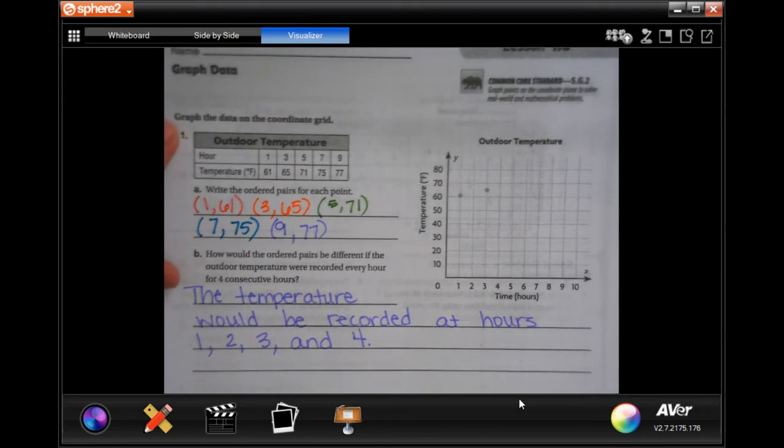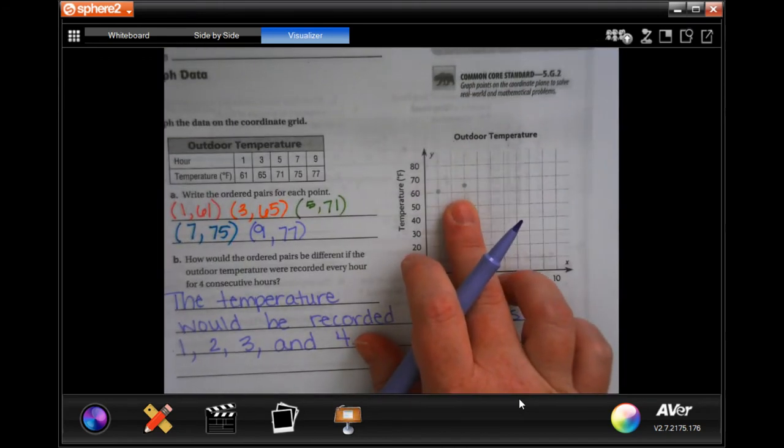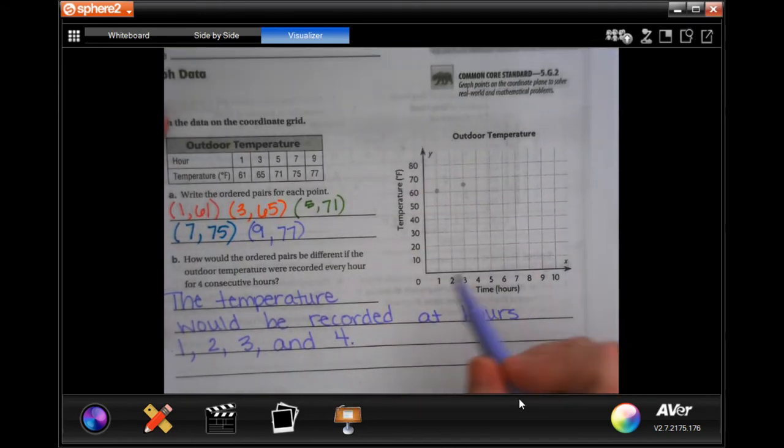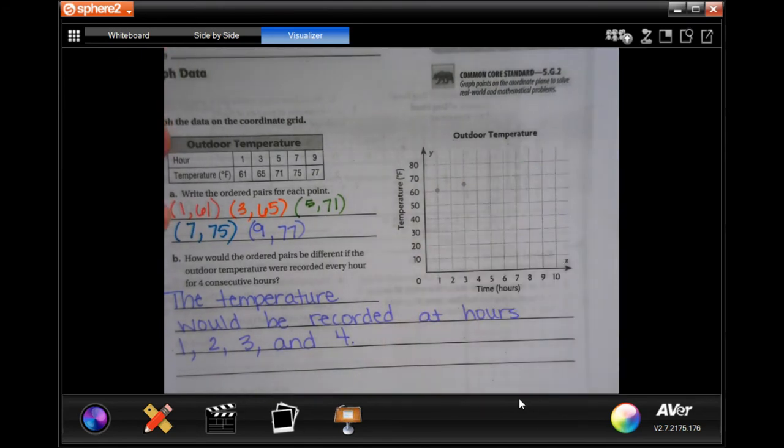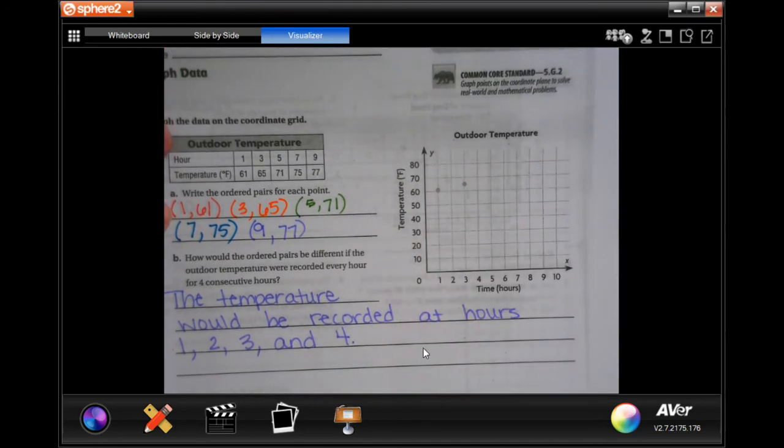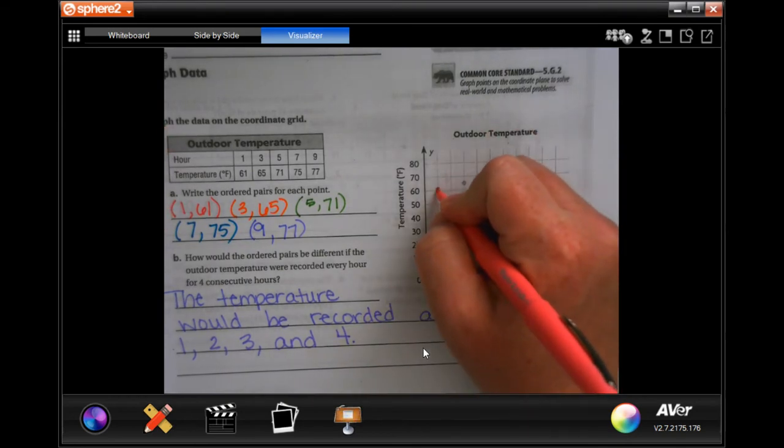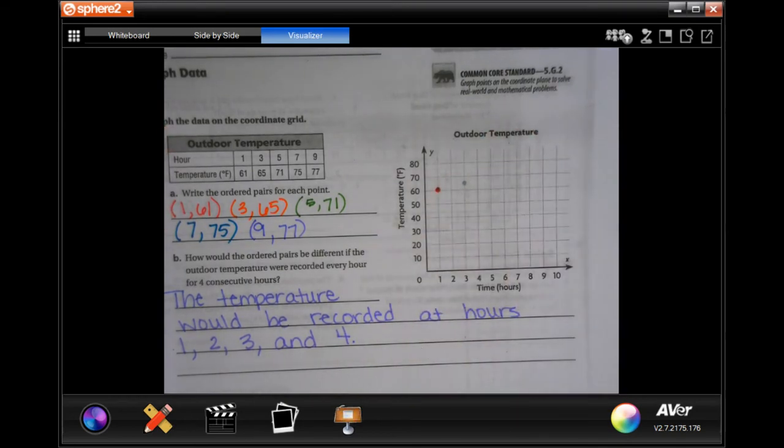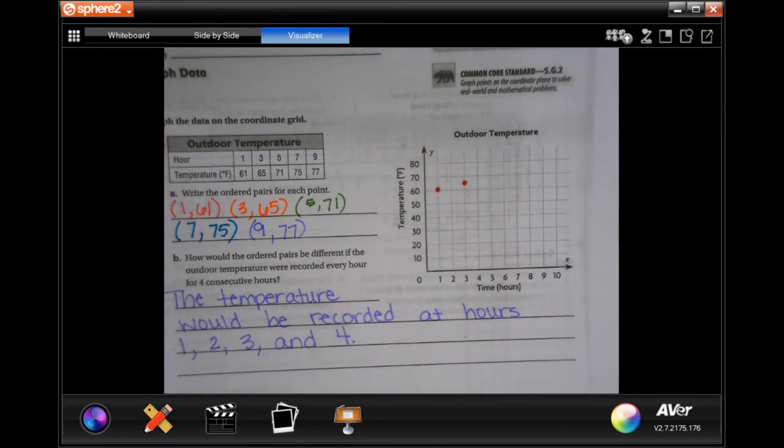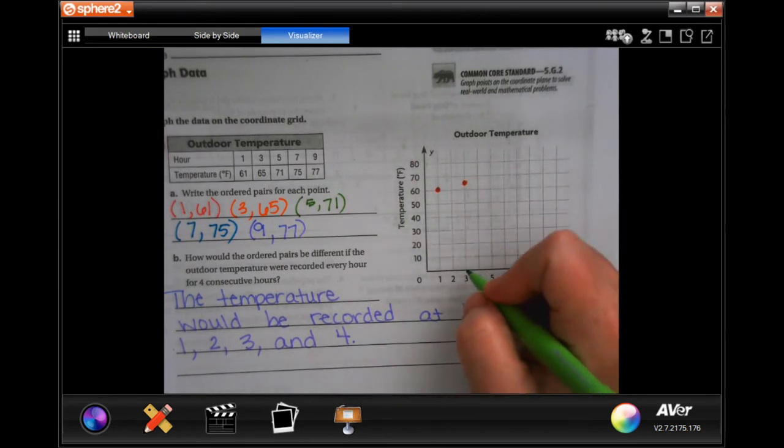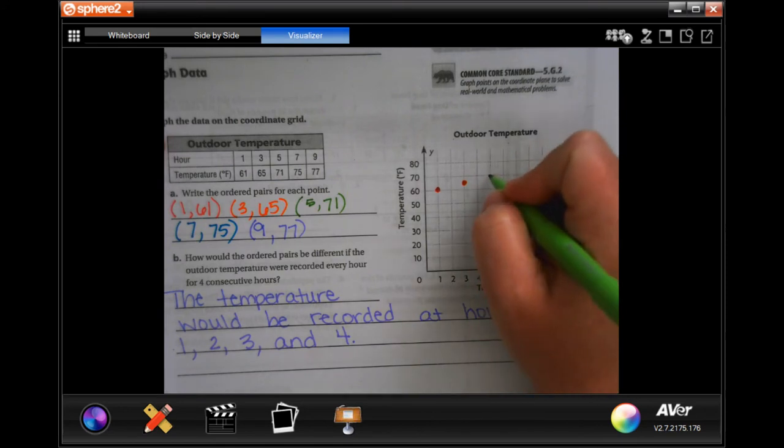It also wants us to graph the ordered pairs, which we can totally do. Remember, over then up. It's already done one and sixty-one, and three and fifty-five. So I'm going to go ahead and do five, and obviously these aren't labeled for our exact numbers, we just have to do the best that we can.